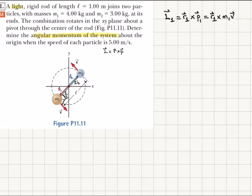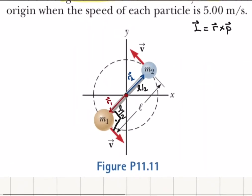If I calculate this cross product, the r1 vector is this one. It's going to have a magnitude l over two. Since the angle between them is 90 degrees, the sine of the angle is one, so L1 vector is going to be m1·v·l over two.